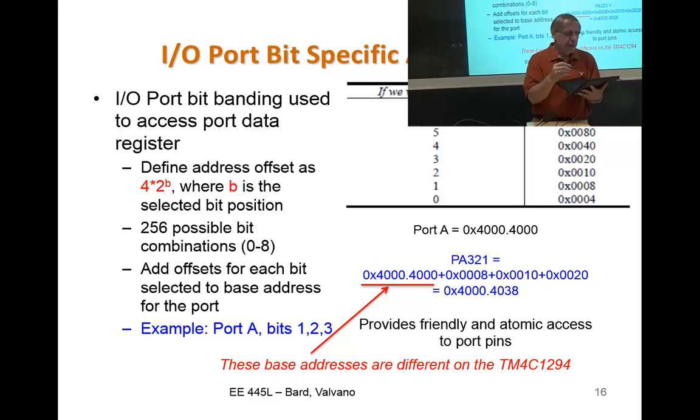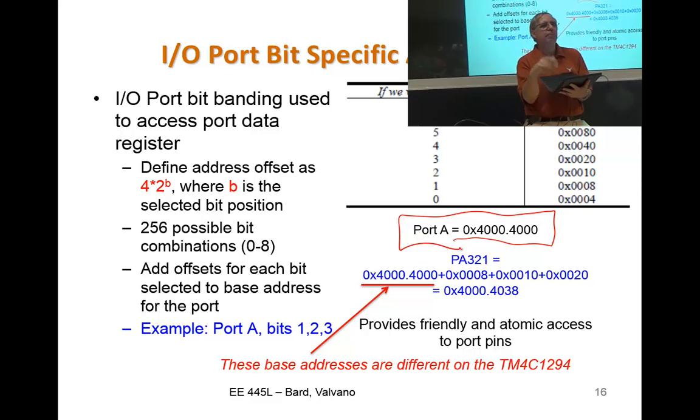I mentioned bit banding. There's a second way to get at devices called bit specific addressing. And this is only true for the ports. The data pins of the port. And not true for the direction or for memory. And basically, if you look at the base address for each of the ports, for each of the ports A, B, C, D, E, and F, there's a base address. And if you want to access all of the bits of that port, we're going to add the number 3FC. You can see that will specify all of the bits of that port. So the base address plus 3FC gets all of the pins of that port.